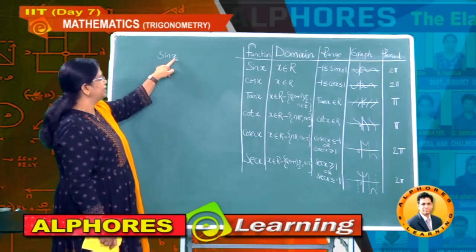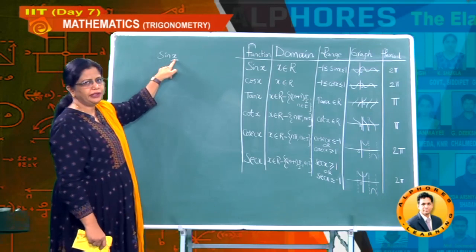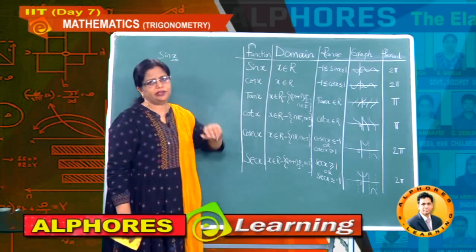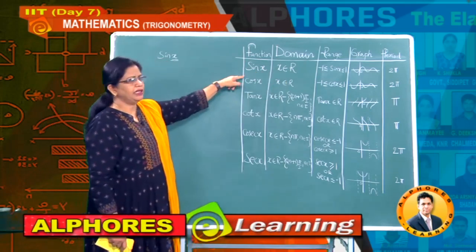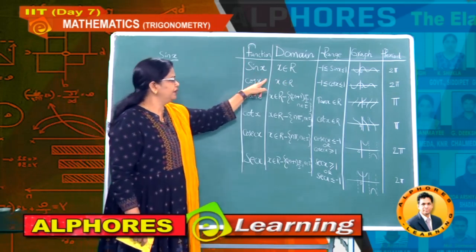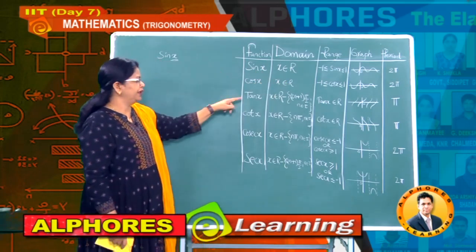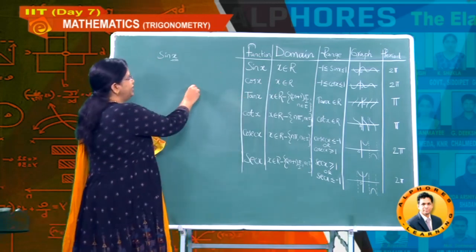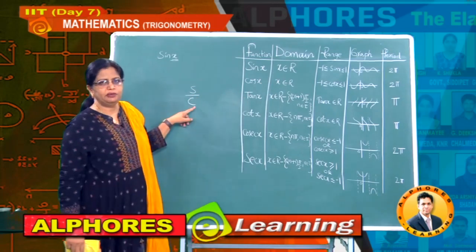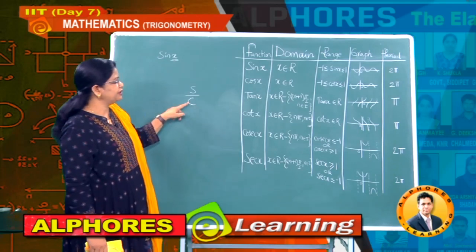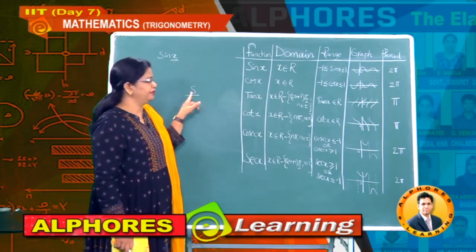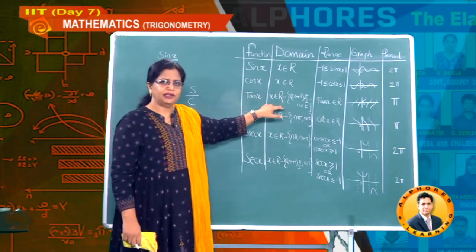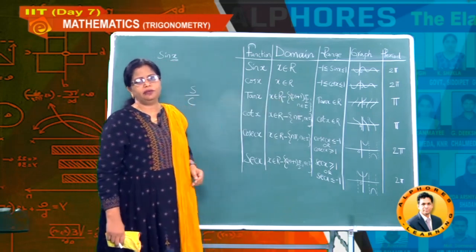For sin x, the domain means the x values that are suitable — for the sine function, those are all real numbers. Similarly for cosine, you can substitute any real number. For tan, it is sin divided by cos, so whenever you write sin x divided by cos x, the denominator must not equal zero. Cos x equals zero at all odd multiples of pi by 2, so the domain of tan is all real numbers except odd multiples of pi by 2.